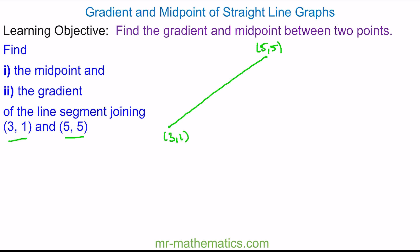To work out the midpoint we need to find the x and the y value halfway along this line. To do this we can work out the change in x, which is the difference between the 3 and the 5, so the change in x is equal to 2. And the change in y, which is the difference between the 5 and the 1, so the change in y is 4.